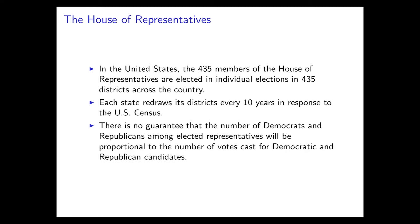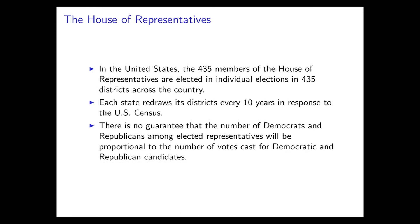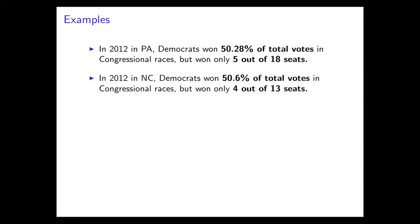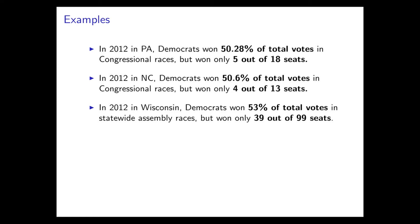One example: in Pennsylvania in 2012, Democrats got a bare majority but only five out of 18 congressional seats. In North Carolina, the same thing happened — Democrats got more than 50% of the vote but only four out of 13 seats. In Wisconsin, looking at the statewide assembly race, out of 99 seats in that state body, Democrats only got 39 even though they won 53% of the vote — a very strong majority. Nationwide, Democrats won a plurality of total congressional votes that year but failed to win control of the House.